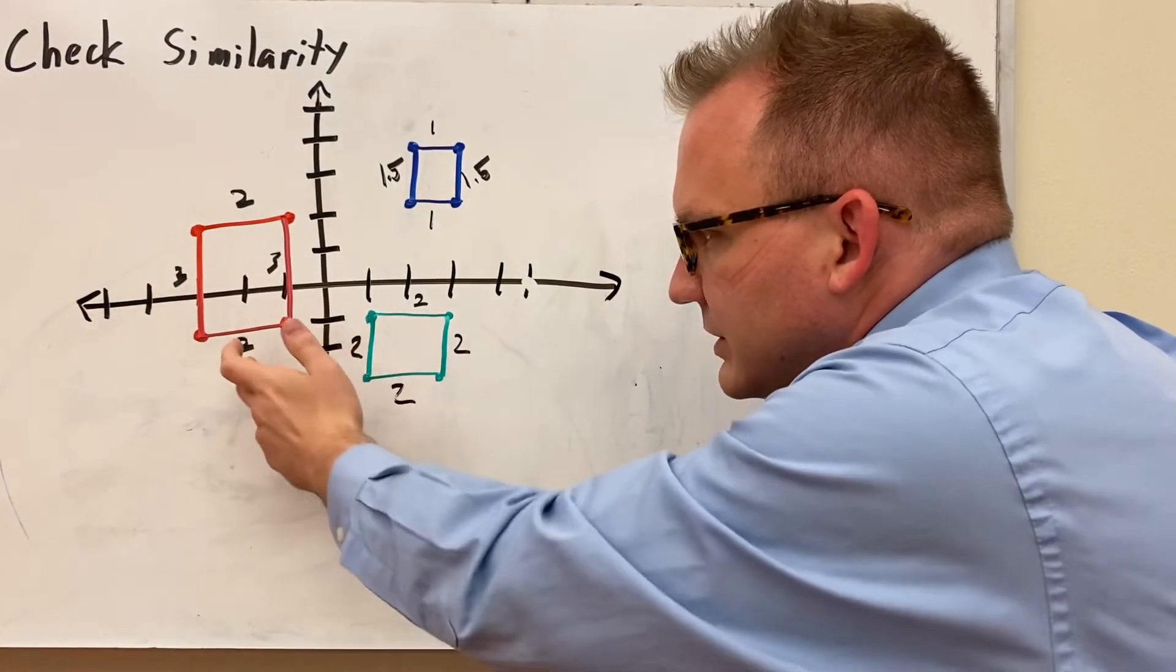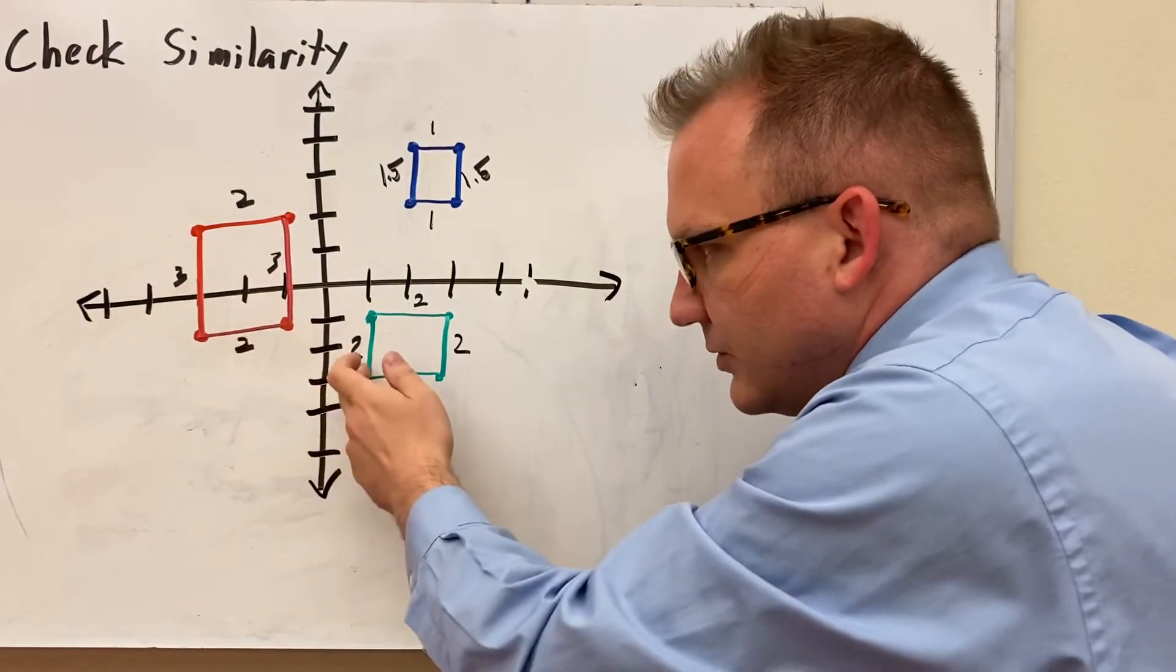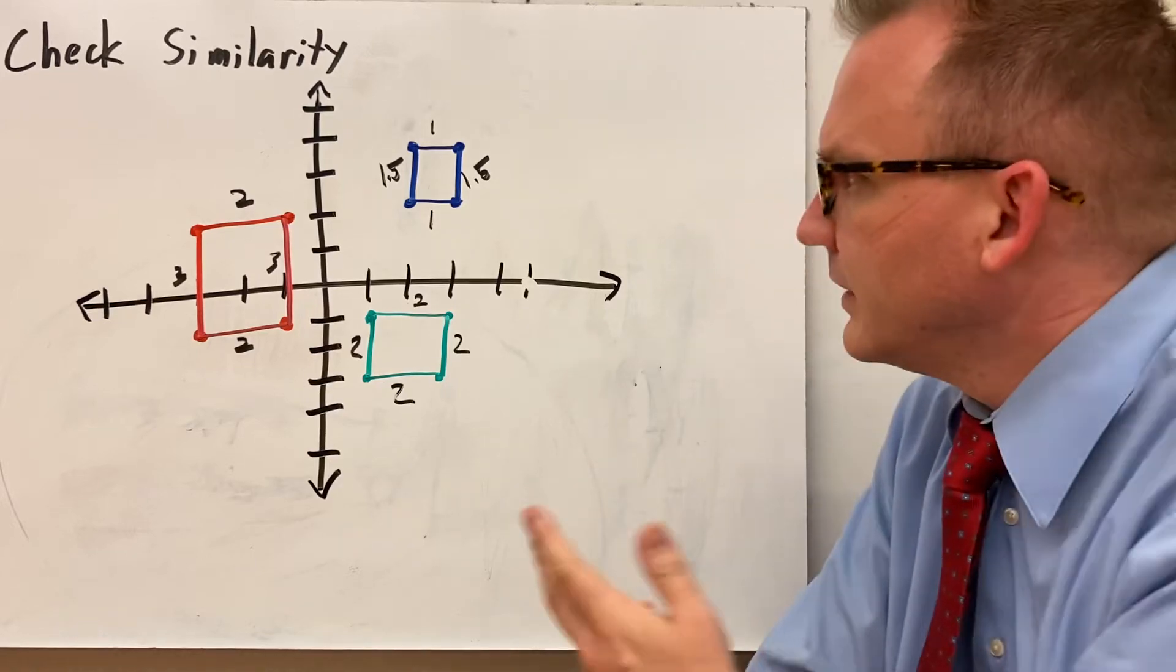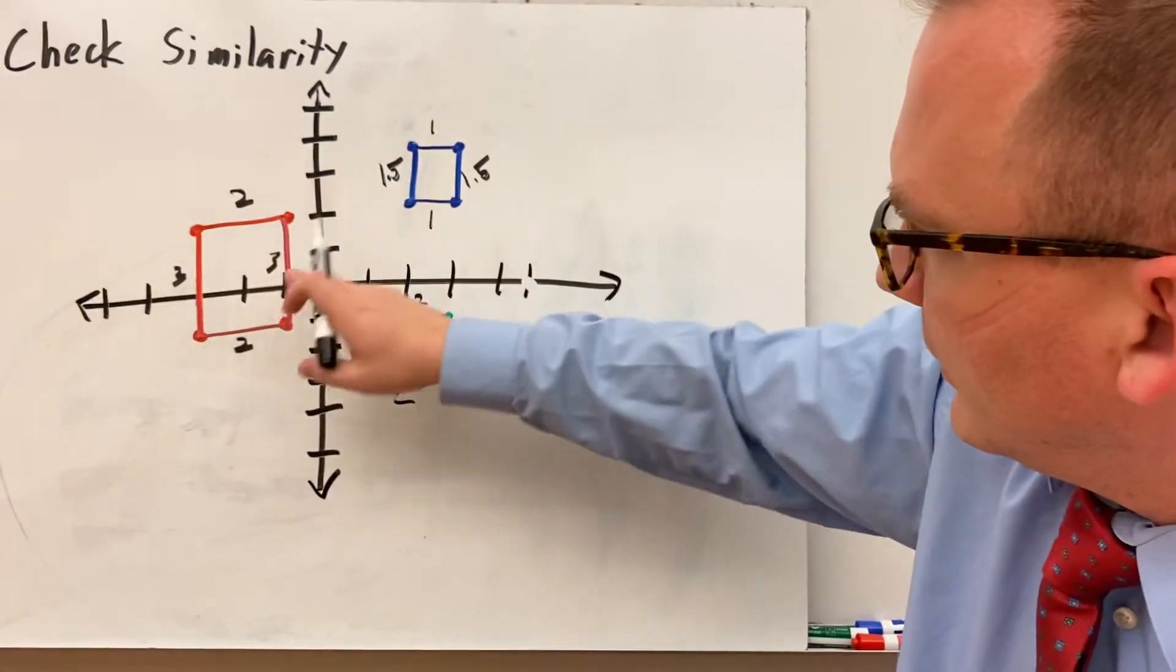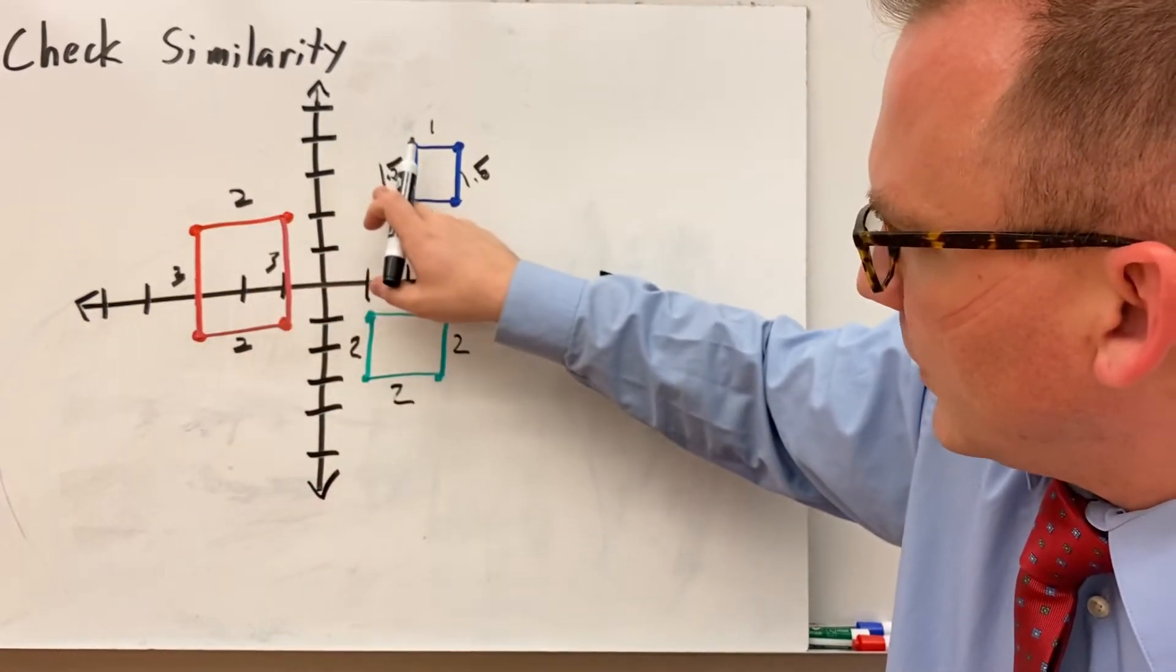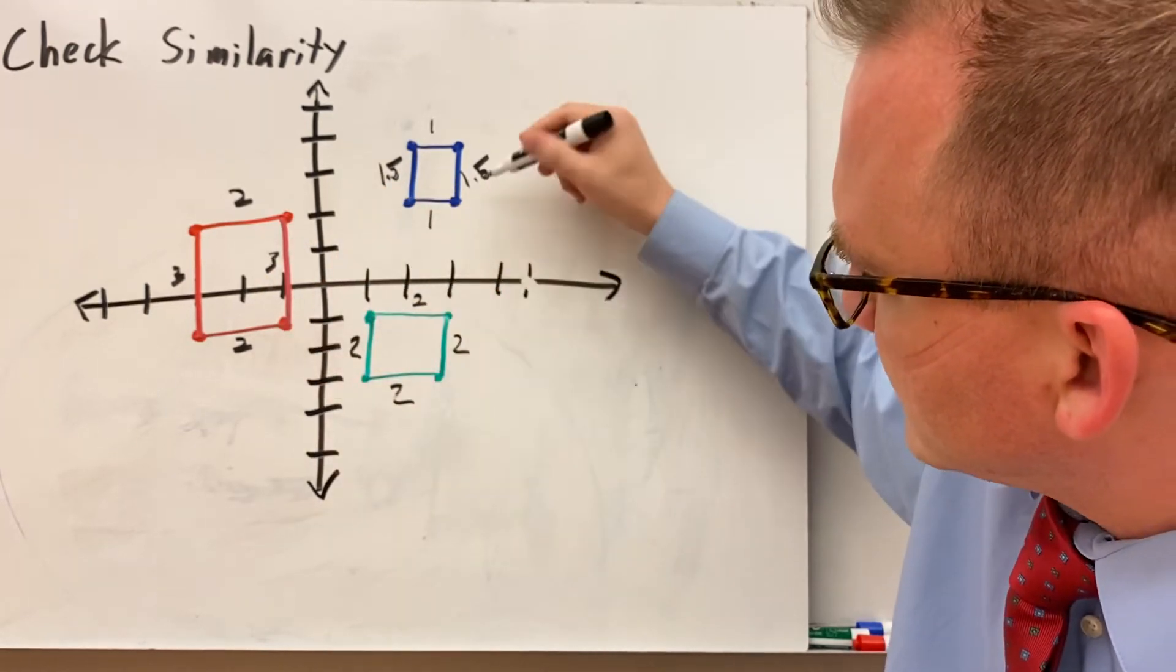However, if I go from here to here, 3 times 1 half is 1.5. So, these sides, this side and this side would be times 1 half, and 2 times 1 half is 1.